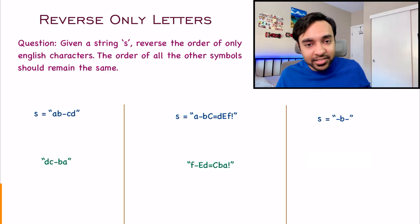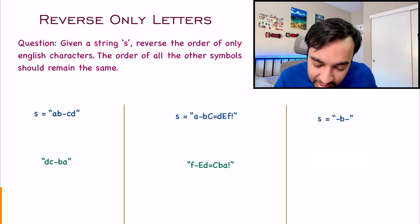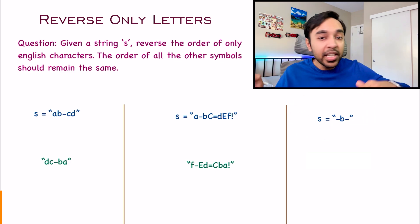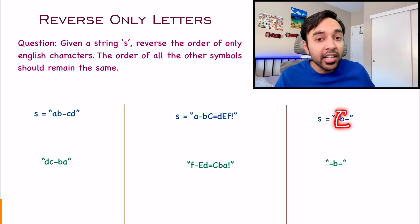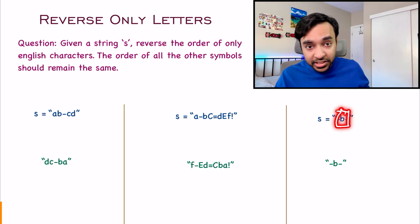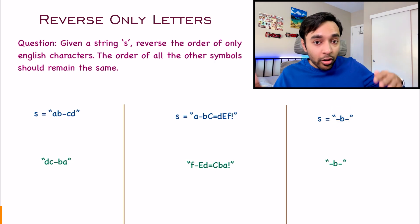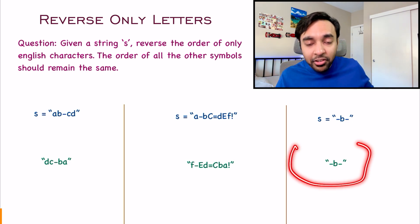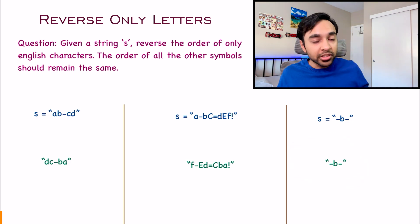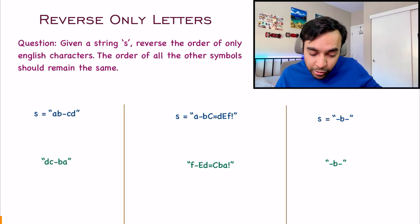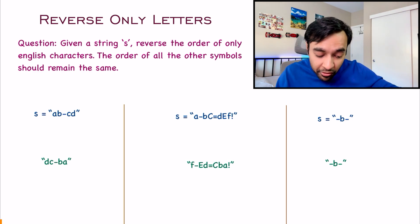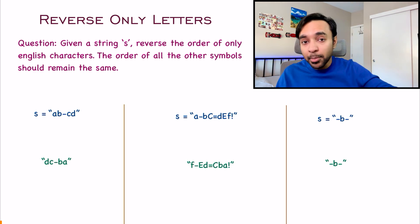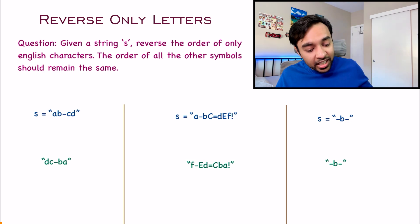Similarly, you can look at the last test case. I have a hyphen, then a B and then a hyphen again. If you have to reverse it, technically you just have one character that you have to reverse. If you reverse it, it stays in the same place. So for the last test case, the answer will look exactly similar to the input, because there are no other English alphabets available. This is what you have to do in the problem — it is pretty straightforward. If you feel you have understood it, feel free to try it out on your own.